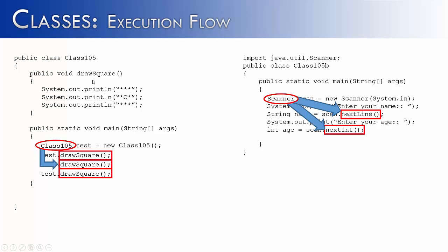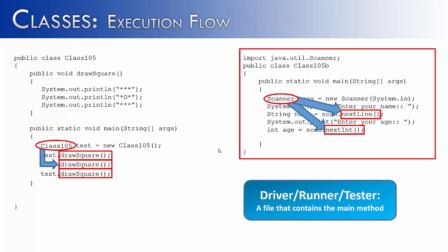Which is more common — to have the methods in the same class we're working in, or to have a class utilizing methods whose implementation we don't see? Hopefully you've done enough programs to realize the more common approach is on the right side. There's usually something called a driver, runner, or tester program that contains the main method, and the methods being used are found inside of a separate class. So two files are created: one being the driver, runner, or tester file, and the other being the class that's going to be used inside of it. This is far more common in Java.